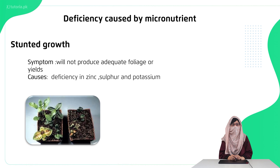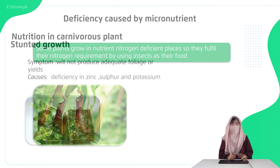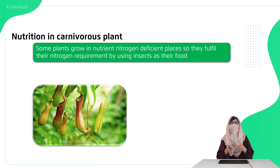Stunted growth is due to micronutrient deficiency. If you look at this diagram, two plants are shown grown at the same time — the plant with full nutrients showed proper growth, while the other plant did not show proper growth and remained small. We call this stunted growth. This is mostly caused by zinc, sulfur, and potassium deficiency.